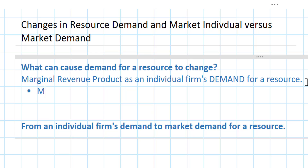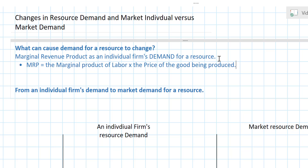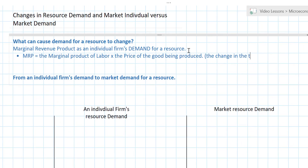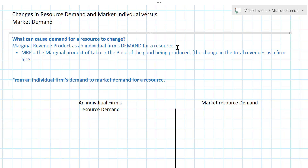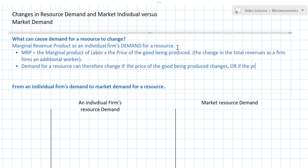So what was marginal revenue product? Marginal revenue product was the marginal product of labor times the price of the good being produced. Another way of looking at it was the change in total revenues as a firm hires an additional worker. So what can cause marginal revenue product, and what can cause the demand for a resource to change? Demand for a resource can therefore change if the price of the good being produced changes, or if the productivity of the resource changes.